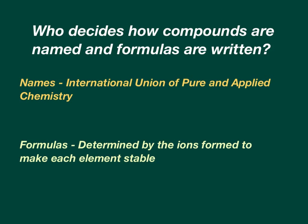First of all, you have to know that these are not my rules for naming compounds. These are decided by the International Union of Pure and Applied Chemistry, the IUPAC. Those are the rules that we'll be following. You're going to need to know what that stands for. But the formulas are determined by the ions that are formed to make each of these stable, and we get that from the periodic table.